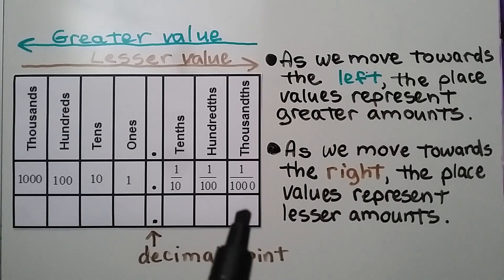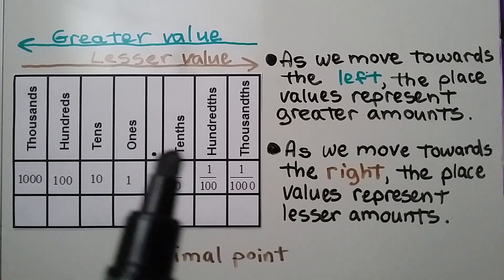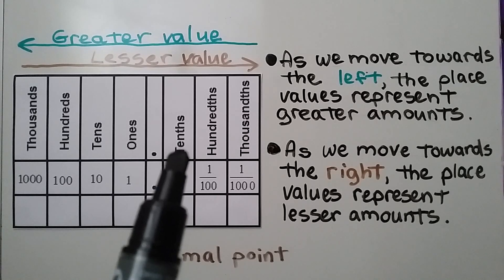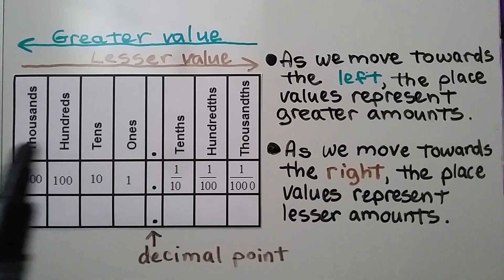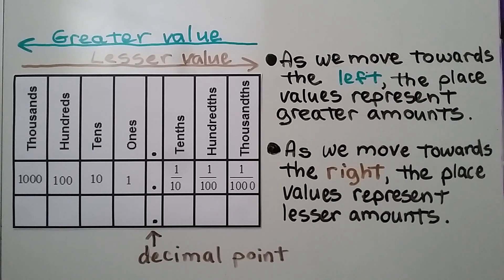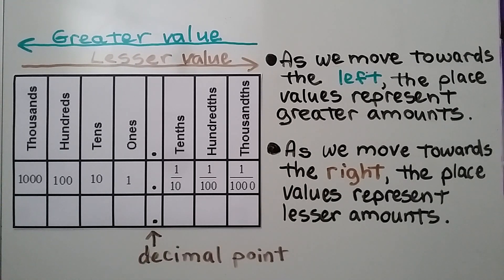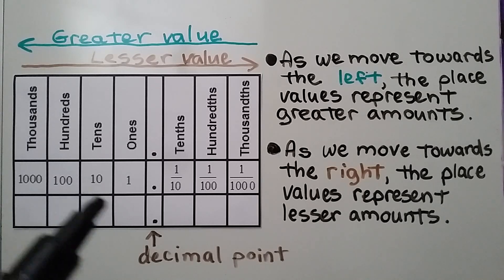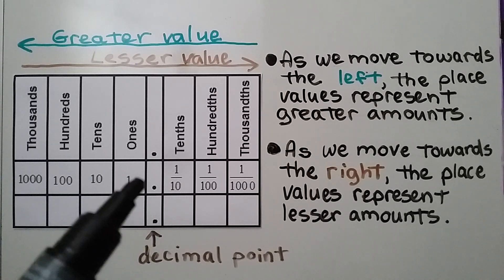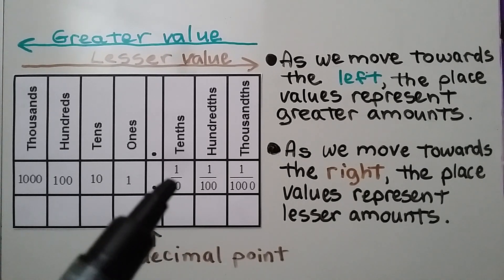As we move towards the left, the place values represent greater amounts. We're going from tenths, which are less than one, to ones, tens, hundreds, thousands, becoming greater amounts. As we move towards the right, the place values represent lesser amounts: hundreds are less than thousands, tens are less than hundreds, ones are less than tens, tenths are less than ones, and hundredths are less than tenths.